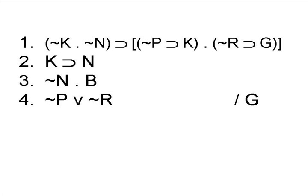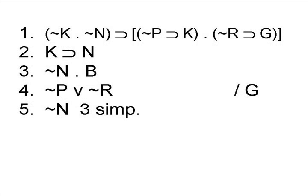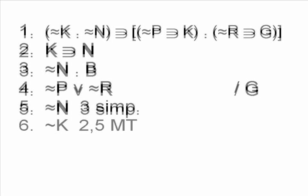Again, notice we have a conjunction in line 3, so unless anything else obviously leaps off the page, you might want to consider simplifying that conjunction. At this point, Hurley always uses simplification to simplify to the left portion, so we know from line 3 we're going to derive the negation of N. Now the question is, what can we do with the negation of N? Well, take a look at line 2. Lines 2 and 5 seem to set up a modus ponens, so we can derive the negation of K.